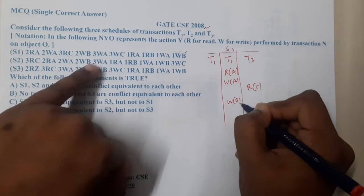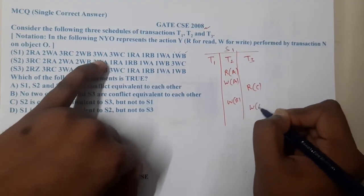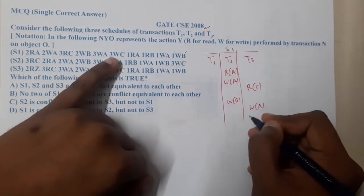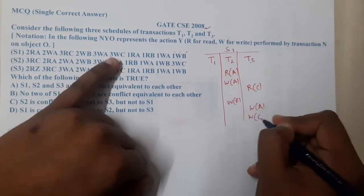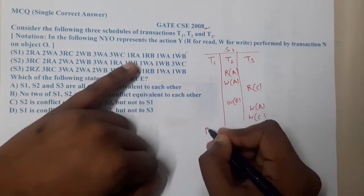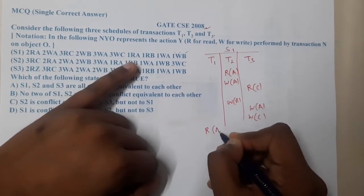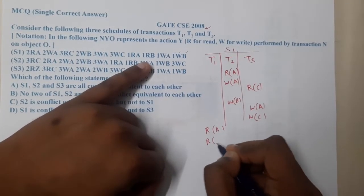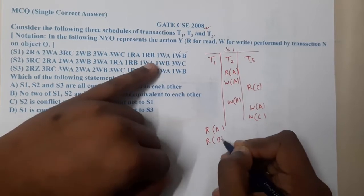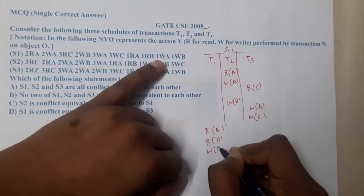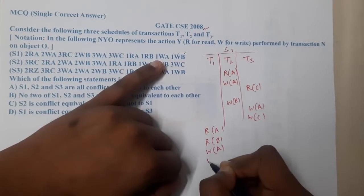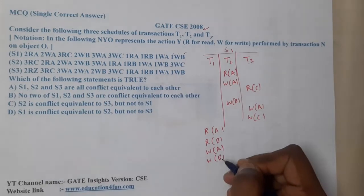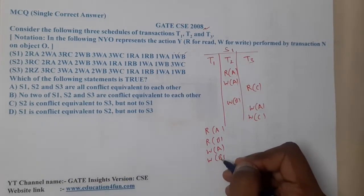Please concentrate while writing these things. If you write one statement in the wrong place, you are going to do the whole problem the wrong way. So always concentrate. Completing S1: Read B, Write A, Write B.